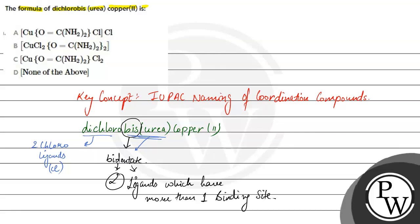Now we have given that bis(urea). Bis(urea) means that we have two urea molecules. Urea is NH2-C=O-NH2. So how can we write this again?